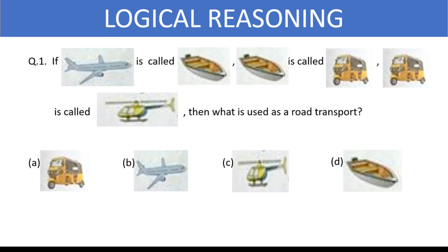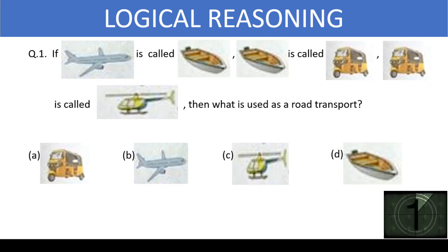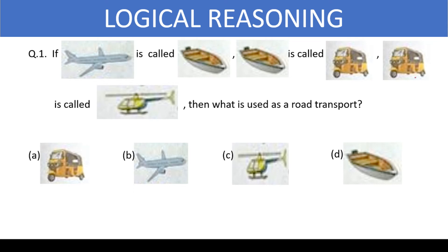In logical reasoning, the first question is: if aeroplane is called boat, and boat is called a rickshaw, and rickshaw is called helicopter, then what is used as road transport? Here the relationship between one object to another is given. The one used for road transport is a rickshaw, and this rickshaw corresponds to a helicopter. So the right answer is option C, helicopter.